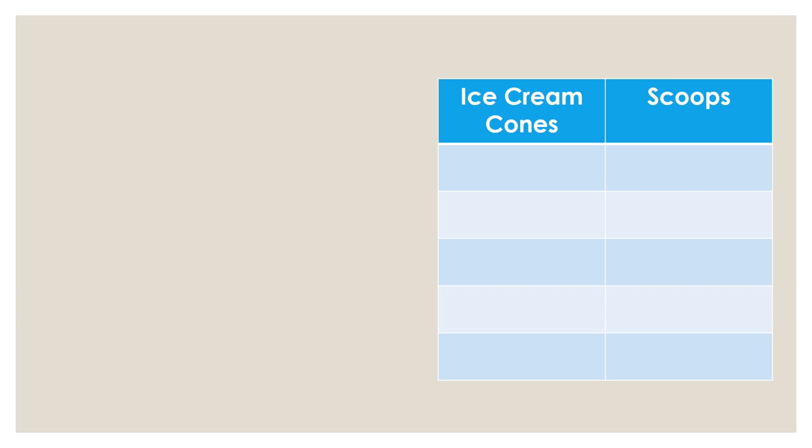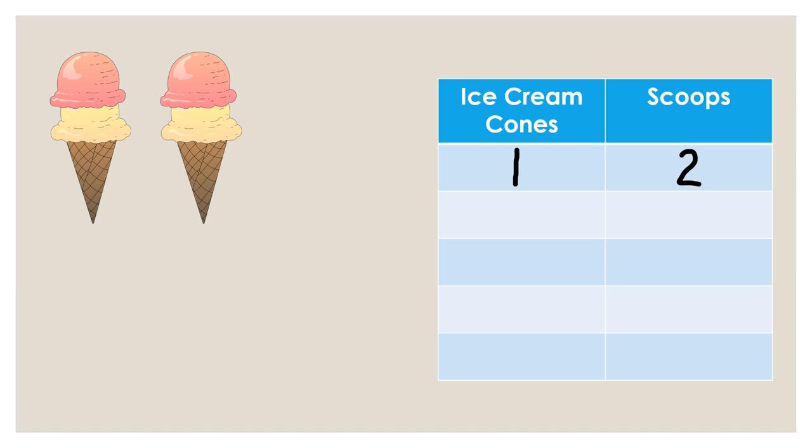Let's build a table to represent our counting. We said that one ice cream cone had two scoops. Two ice cream cones have four scoops. Three ice cream cones have how many scoops? Did you say six scoops?